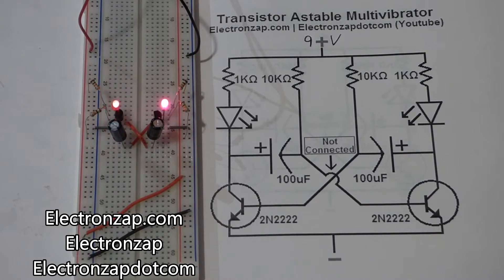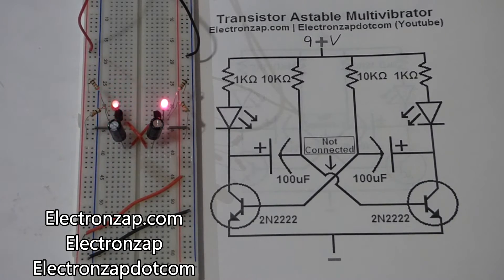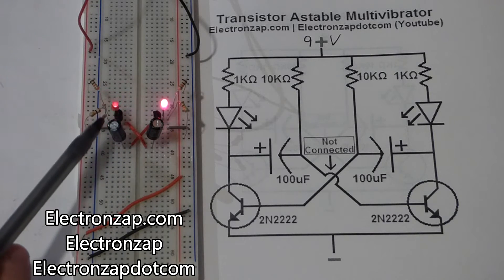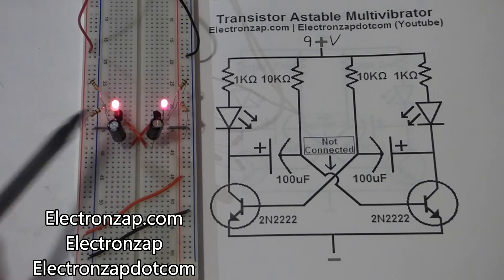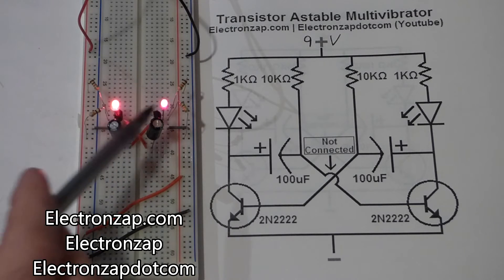This is an astable multivibrator circuit that I just put together and what this does is it uses oscillations to flash two LEDs. They flash alternatively.